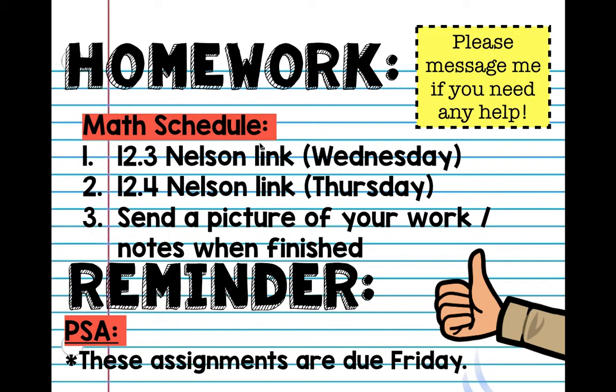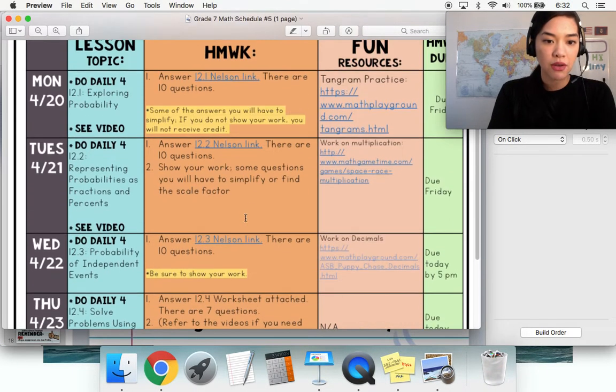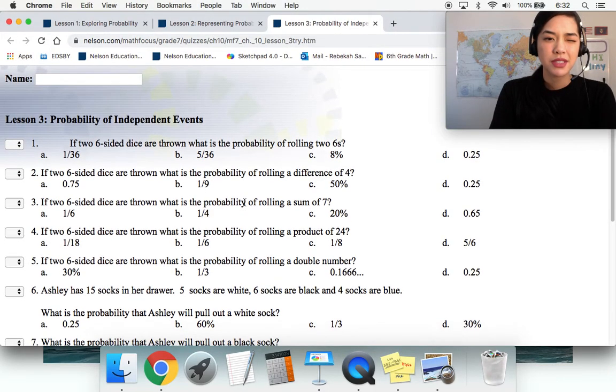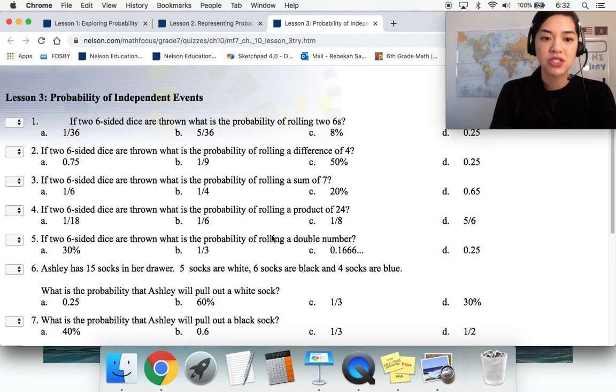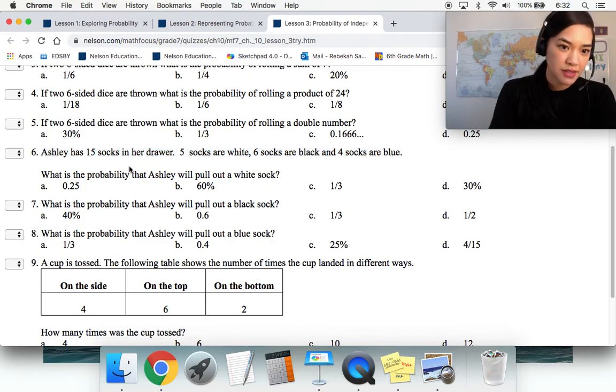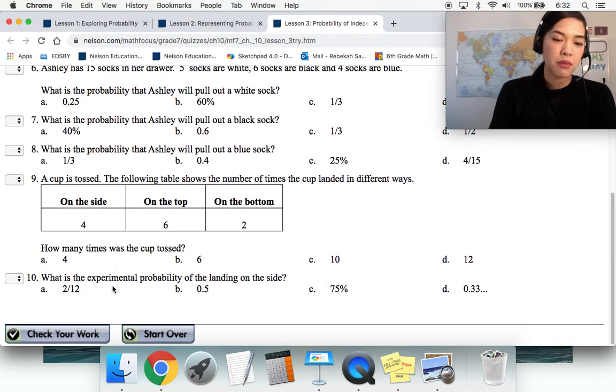So your link for today is your Nelson link. It says Nelson link here, but you have a worksheet. So for Wednesday, you guys have this. So this is the problems that we did, just different numbers. And I changed just like from socks to hoodies and experimental probability is right here.